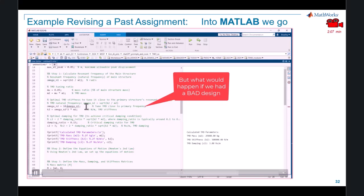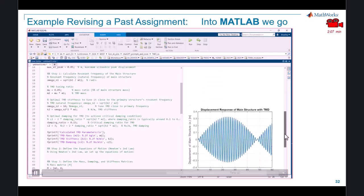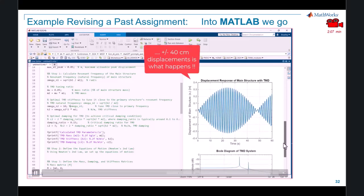So the rationale here is that when I now run the code with this bad design, we should see significantly larger displacements when we solve those ODEs in MATLAB. And as I scroll down, bang, now our skyscraper's moving backwards and forwards of the order of plus or minus 30 centimeters.